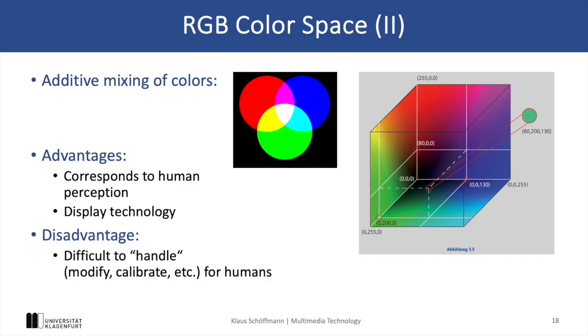RGB's additive nature is very advantageous for displays, but it presents a challenge for us humans if we want to calibrate color. For example, if we start with a specific color and would like to make it a little brighter or a little more intense, this is really hard with RGB because we would need to change the different RGB values, not only one channel.